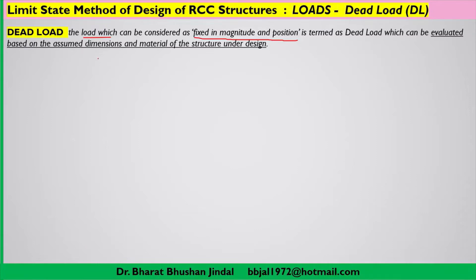Dead load can be assumed based on the assumed dimensions. When you are going to design an RCC beam, you do not initially have information regarding the cross-section dimensions of the beam. In the design steps, you first assume some value for the cross-section dimensions, then work out what will be the self-weight of that particular beam or section. The load which is fixed in magnitude and position is termed as dead load.